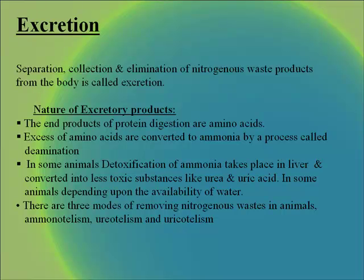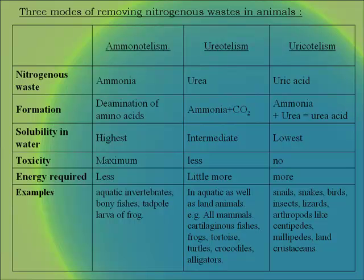Excretion is the separation, collection and elimination of nitrogenous waste products from the body. The end products of protein digestion are amino acids. Excess amino acids are converted to ammonia by a process called deamination. In some animals, detoxification of ammonia takes place in the liver and is converted into less toxic substances like urea and uric acid, depending upon the availability of water. There are three modes of removing nitrogenous wastes in animals: ammonotelism, ureotelism and uricotelism.